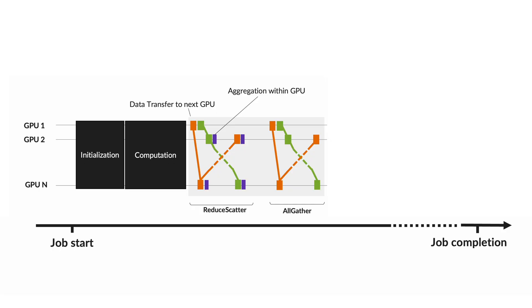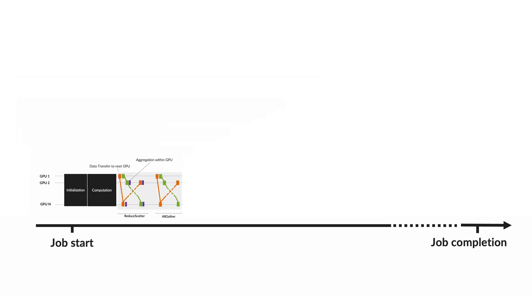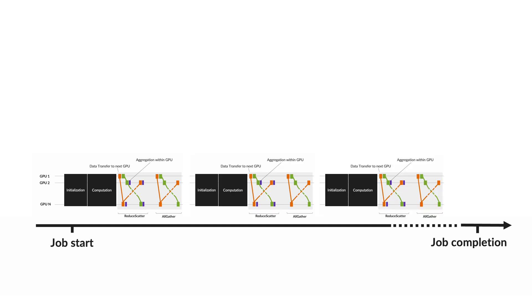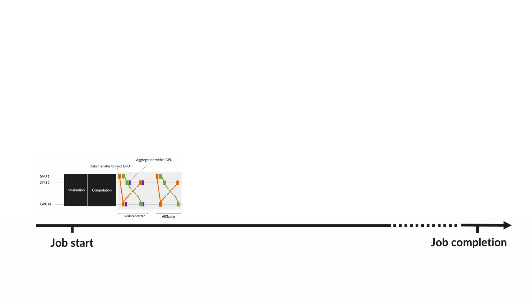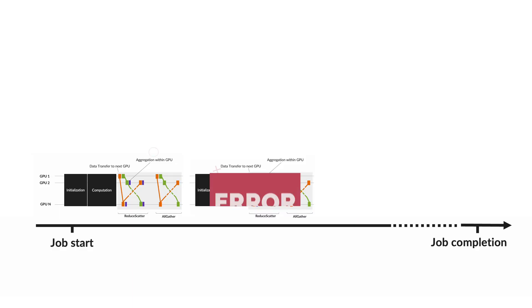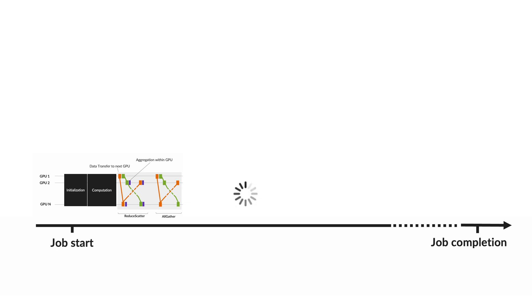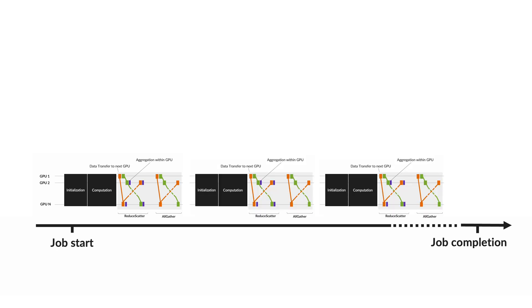The key sequence — initialization, computation, data transfer, and aggregation — represents a single iteration, and this is repeated multiple times until the entire training job is complete. Crucially, if any iteration fails, for example due to an error in computation or data transfer, the job halts and that iteration is repeated.